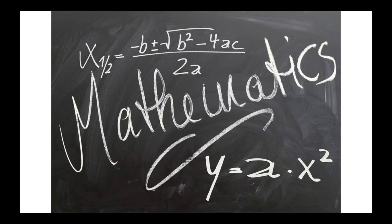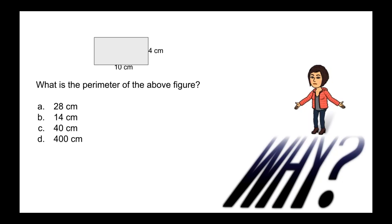One thing I hear a lot of educators say is, 'The thing about math I like is it's just black and white — it's right or it's wrong.' Honestly, that gets under my skin, because math is anything but black and white. There are lots of different ways kids could be making sense of a problem or having a misconception. The kid who answered D because they had no way to do this problem is a different kid than the one who put B and just didn't add all four sides.